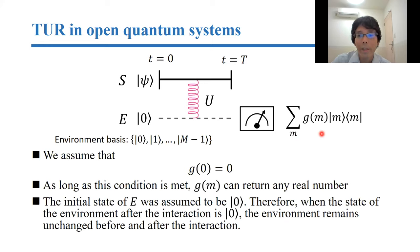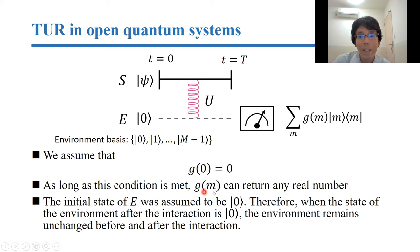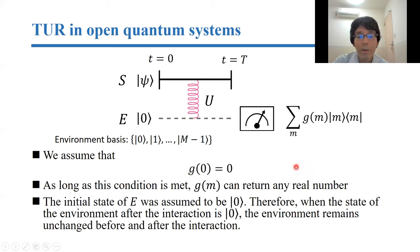After the interaction, we measure the environment by these operators. Here g_m is some real function, and I assume this real function satisfies a given condition. As long as this condition is met, g_m can return any real number, so this condition can be considered a minimum requirement for a counting observable.